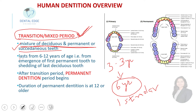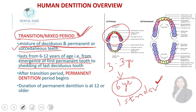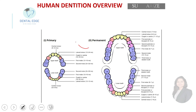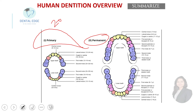The transition or mixed period lasts from six to twelve years of age — from the emergence of the first permanent molar up to the shedding of the last deciduous tooth. Once all primary teeth have shed and only permanent teeth are present in the oral cavity, this is called the permanent dentition period, which typically begins at twelve years or older.